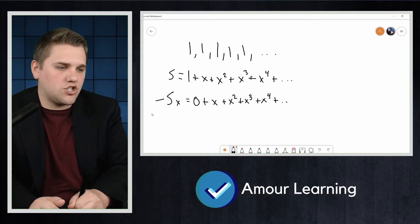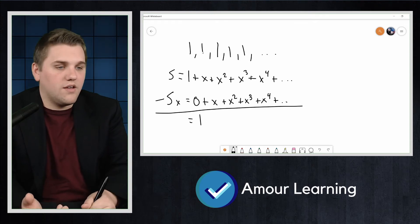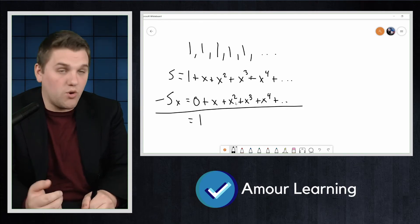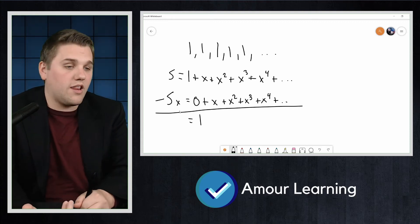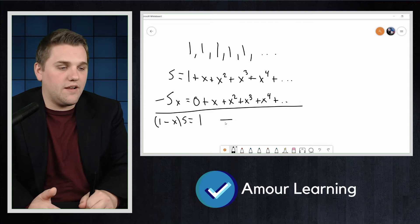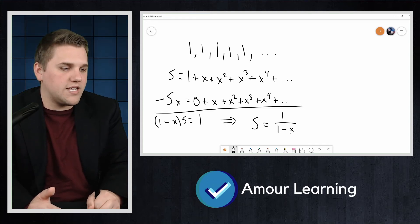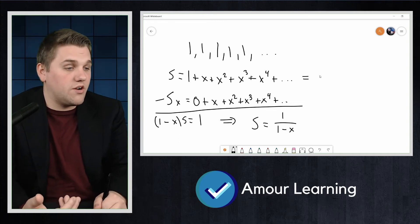And we take s and subtract s times x—this whole thing, we're subtracting each term here. On the right side: 1 - 0 is 1, x - x is 0, x^2 - x^2 is 0, x^3 - x^3 is 0, and so forth. So on the right side we just have 1, and on the left side we have (1 - x) times s. That means s is 1 over (1 - x). So this series is just 1/(1-x).